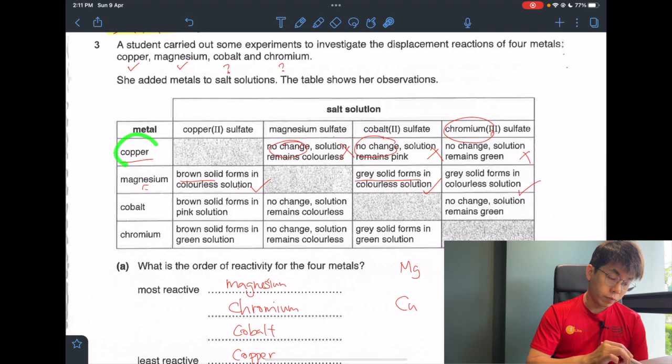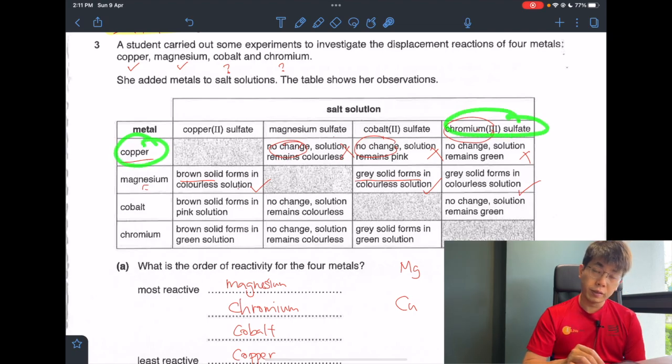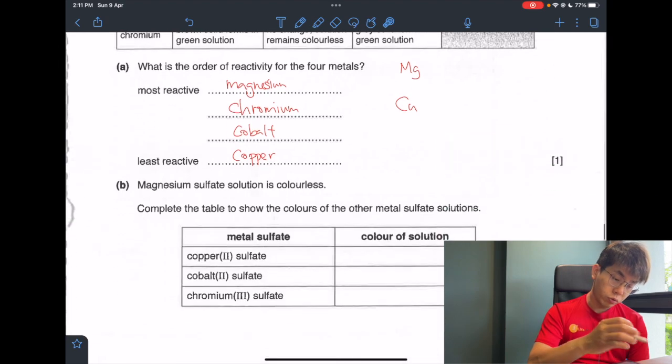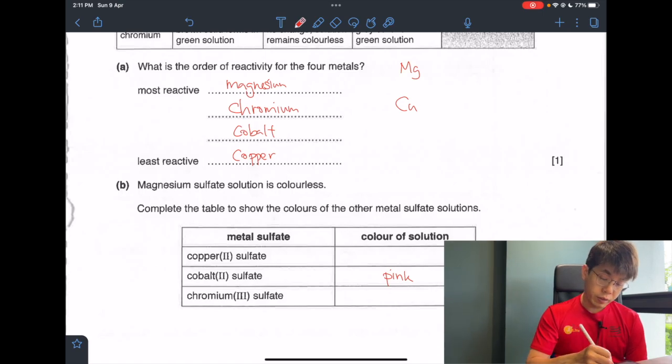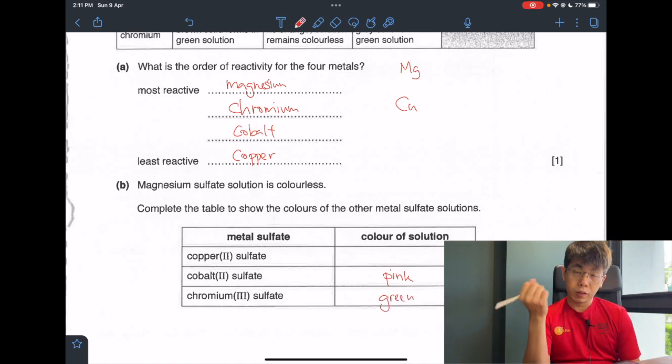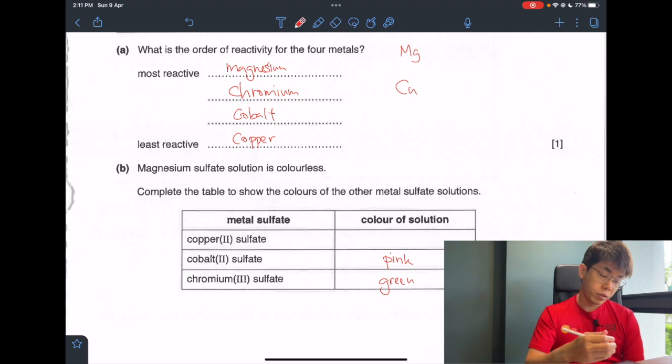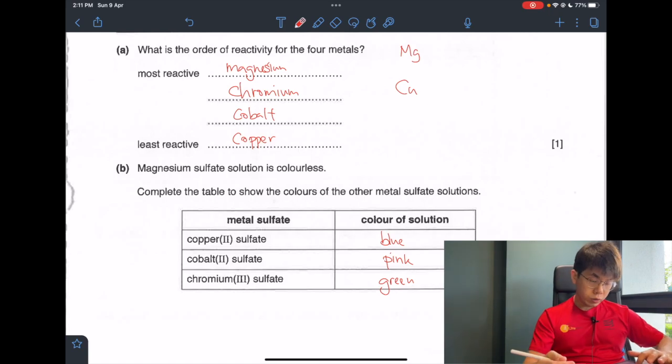Let's look at copper with chromium(III) sulfate. Because copper cannot displace chromium(III) sulfate, chromium(III) sulfate will remain. Chromium(III) sulfate remains green, means that chromium(III) sulfate is green. So I know that cobalt(II) sulfate is pink and chromium(III) sulfate is green. Then what about copper(II) sulfate? This is something you need to know, because this is something you've been doing since sec 1. Copper(II) sulfate is blue in color.